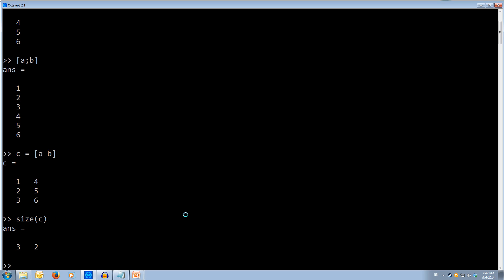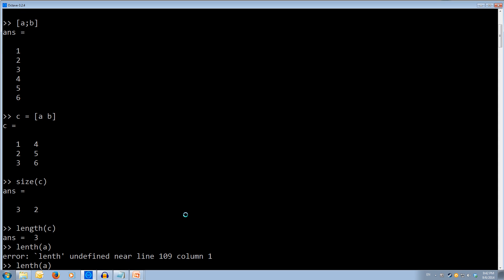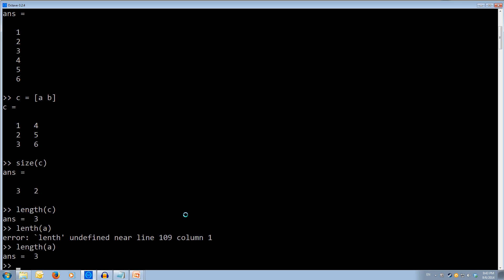Now we can also use length. So if we do length and we do length of c, we'll get back three. Because that's the length of the longest side of the matrix. Now if we also use length on a vector, so a, which was our one, two, three, if you remember, we'll get, we also get three as that's, we get just three, which is the length of a.